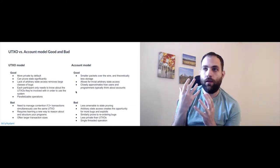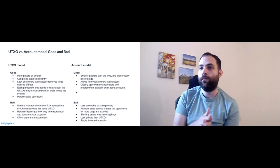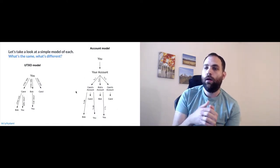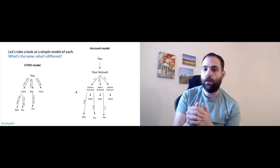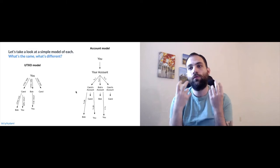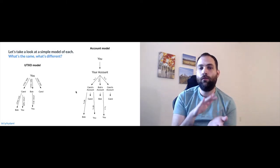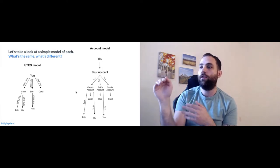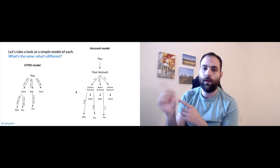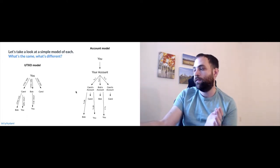Within the UTXO model, as you can see on the left, each contract has its own UTXO. The contracts from you to Carol, to Bob, and also to Carol again are all represented by UTXOs, and the same for Carol and Bob. On the account model side on the right, rather than individual UTXOs, every contract has its own generalized address, and from that address you do transactions out to other accounts.